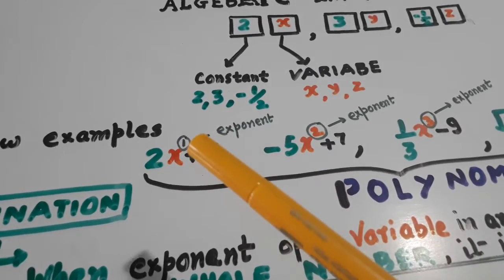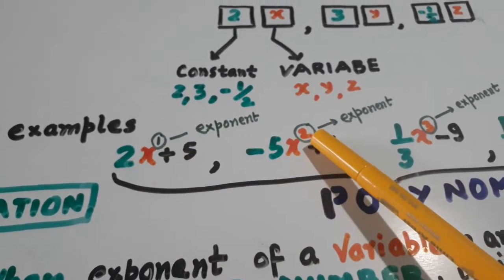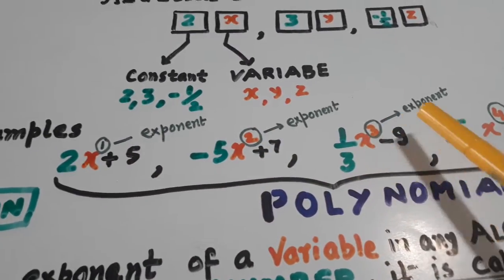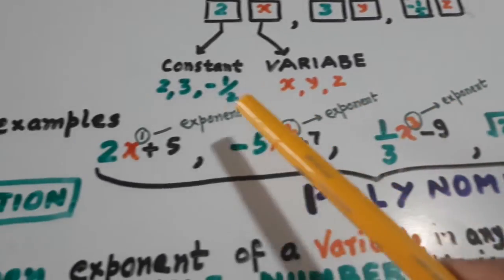Yeh joh power hai, isko exponent bolta hai. Yahan pe power kitni hai - 1, 2, 3, 4. They are called exponents.